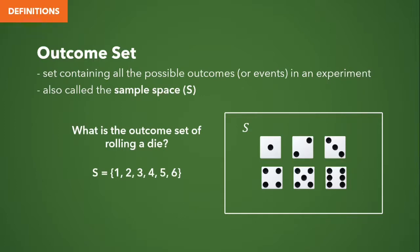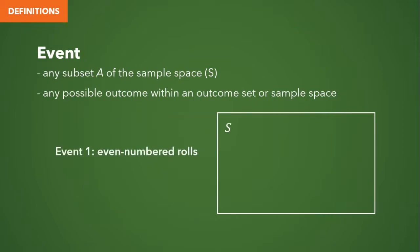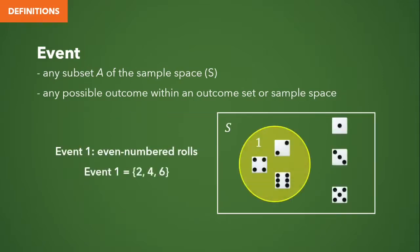Next, we have the event. An event is any subset A of the sample space, or it is any possible outcome within the sample space. In pictorial form, we represent the event with a circle inside the sample space. So if our event is even numbered rolls in a single roll of a die, the only values that should be contained in our event are 2, 4, and 6. The values 1, 3, and 5 are still outcomes of our experiment, but they are not even, and therefore they should not be inside the circle, but should still be inside the sample space.